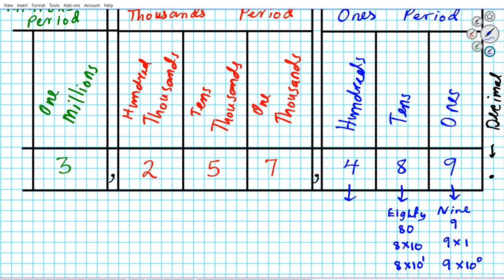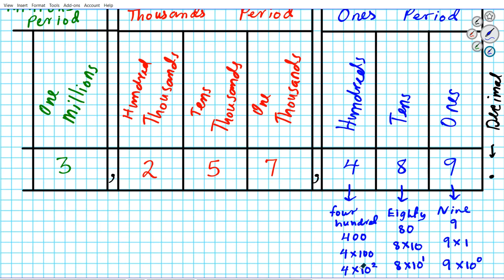Hundreds place: we have four in the hundreds place, so its value is 400. In numerical form it's 400. In expanded form without exponents it's four times 100. You see how the number of zeros are increasing — zero zeros, then one zero, then two zeros. With exponents, in expanded form it's four times ten to the second power. If you have difficulty with this conversion, feel free to take a look at tutorial 1.1 where we went over the powers of ten.